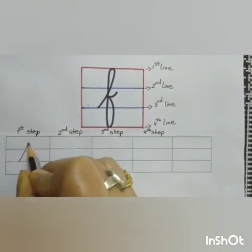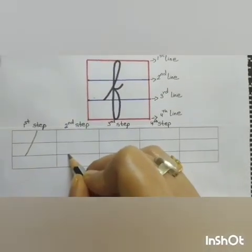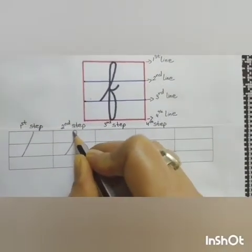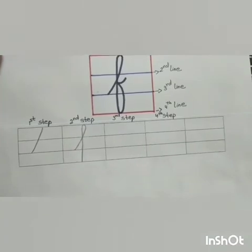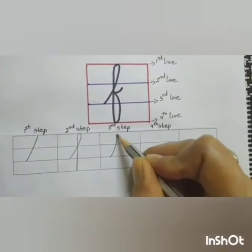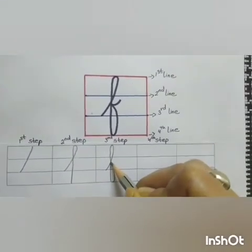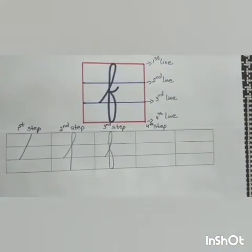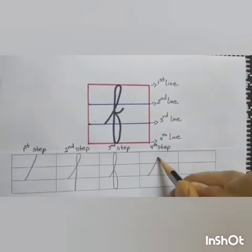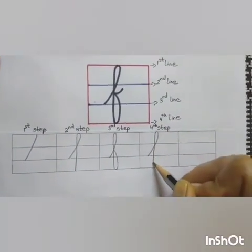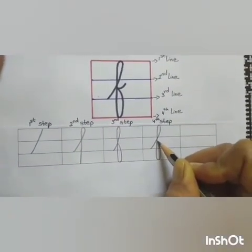Start from the 3rd line, go up to the 1st line. Then, make a loop and come down straight to the 4th line. Then, make a loop and come down straight to the 4th line. And, finishing with a small curve.